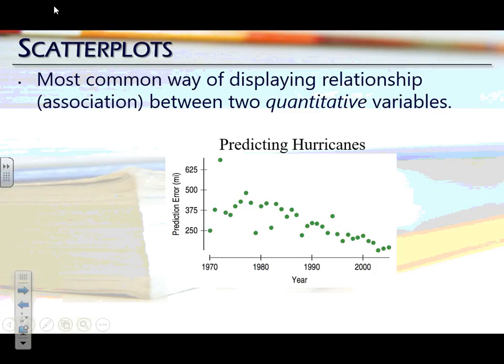Your scatterplots are going to have an x and y axis, just like any other graphical display. Your x-axis is going to be your independent variable — that's your explanatory variable. When you identify your explanatory variable, that automatically means it has to be the x-axis of your graph. When you identify your response variable, that automatically becomes the y-axis.